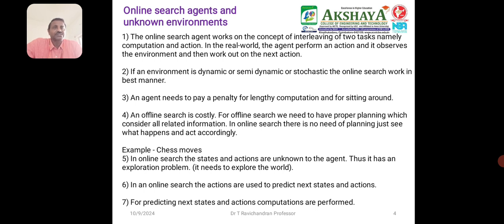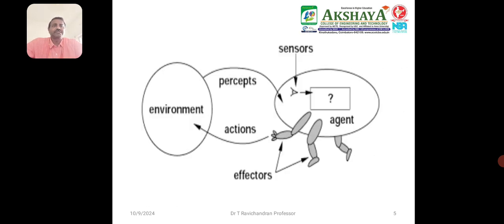In online search, actions are used to predict the next state and actions. For the prediction of next state actions, computation is required for performance. The online search agent collects all information online at a particular instant or in a particular environment, and from the unknown environment takes the decision to move toward a better solution. The agent uses sensors and actuators and presents the results accordingly, gathering information through online search from the unknown environment.